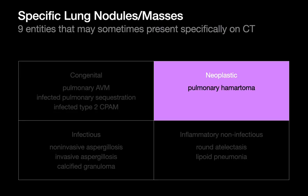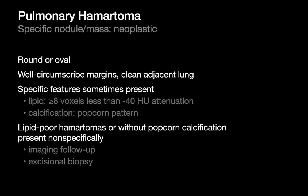Moving on, there is one entity in the neoplastic category that can present specifically, and that's a pulmonary hamartoma. Pulmonary hamartomas are generally nice, well-circumscribed nodules. The lung adjacent is very clean — it's unusual to encounter a ground glass halo around these. They tend to be ovoid in shape. Sometimes some of these will present specifically. The most specific feature: the more lipid-rich ones will actually present with macroscopically visible fat inside the nodule. There's nothing else that would look like this — if you see a nodule with macroscopic fat within it, that's pretty specific for a pulmonary hamartoma.